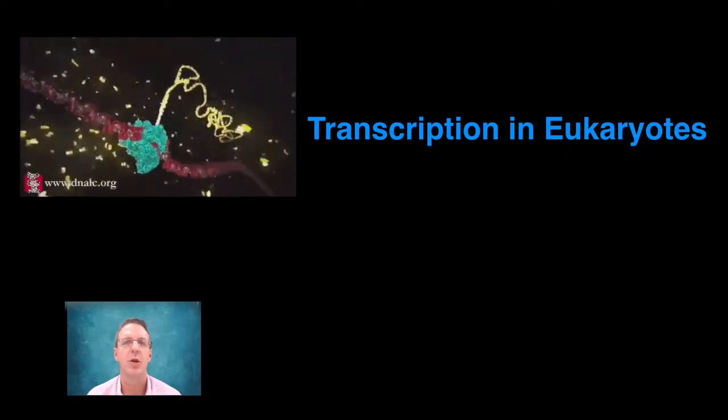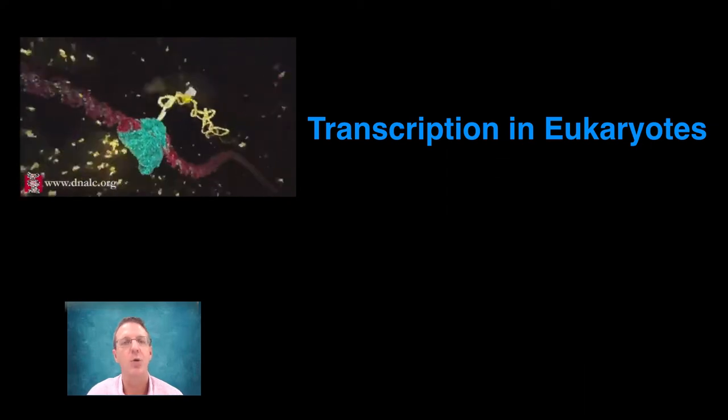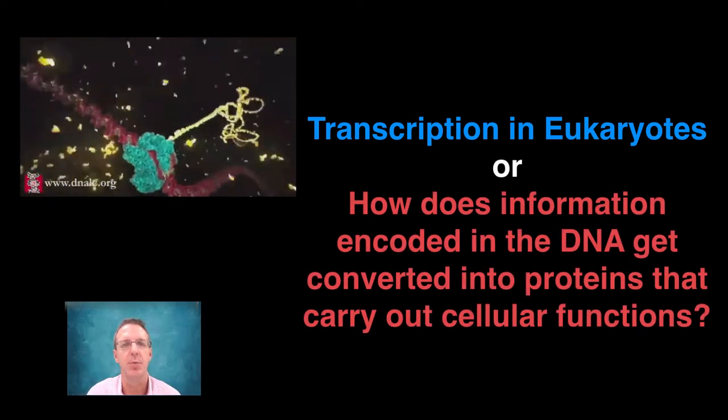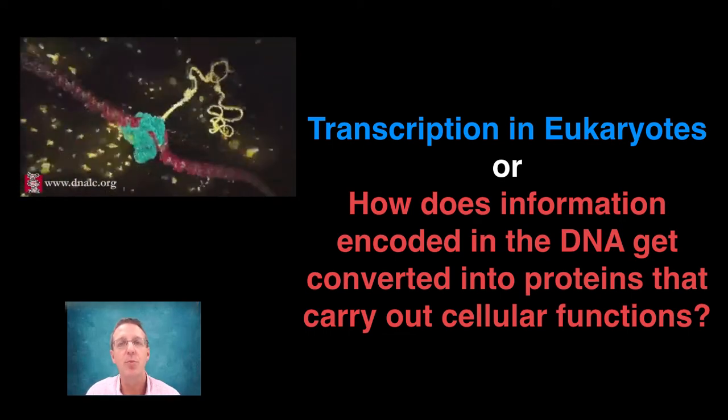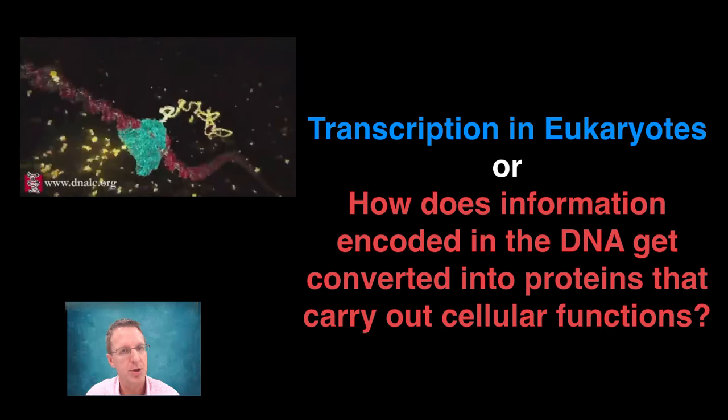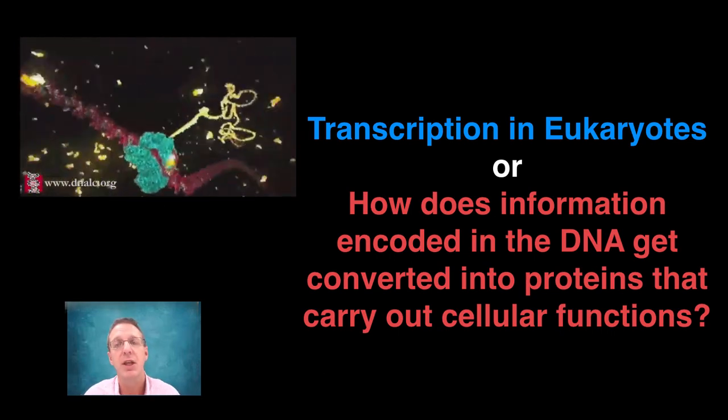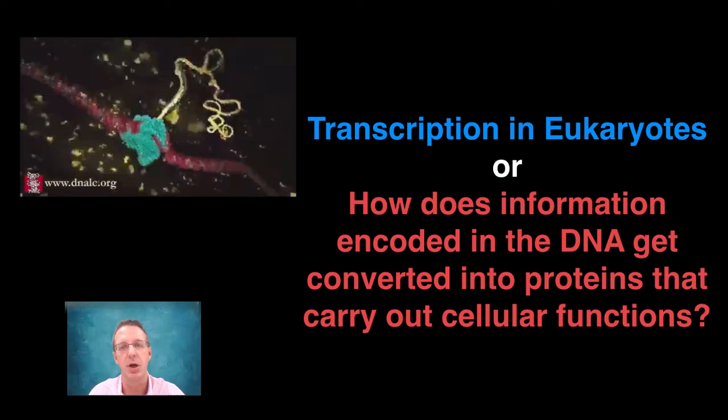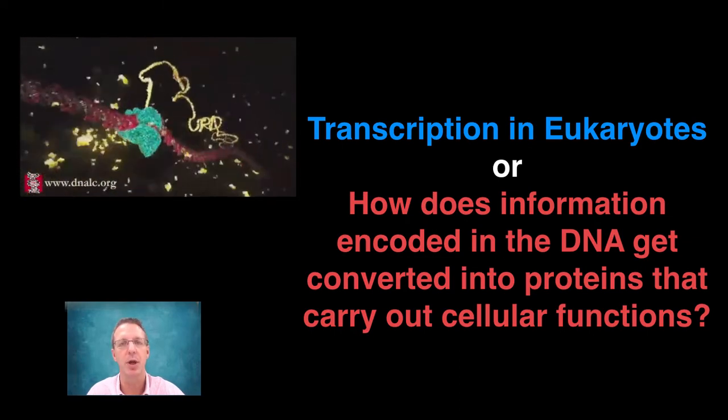Hi, I'm Dr. Pierce and welcome to this video on eukaryotic transcription or how does the information encoded in the DNA get converted into proteins that carry out cellular functions. Now, granted there are two parts to this process, transcription and translation, but the latter will be in a different video. In this video I would like to discuss how DNA is converted into pre-mRNA and what happens to that pre-mRNA to turn it into the final mRNA product.